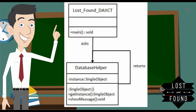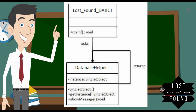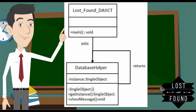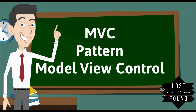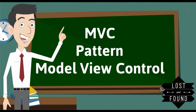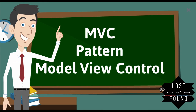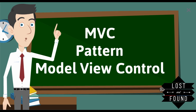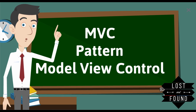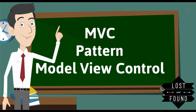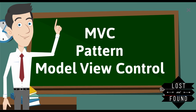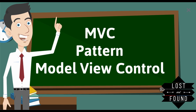The getInstance method will return a single object — if no object has been created, it creates one and returns it. Second, the MVC design pattern. MVC stands for Model, View, and Controller, used to separate application concerns. The Model represents an object and has logic to update the controller if data changes. The View represents a visualization of the data the model contains. The Controller acts on both model and view — it controls the data flow into a model object, updates the view whenever data changes, and keeps the view and model separate.